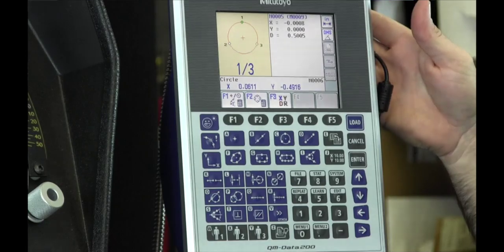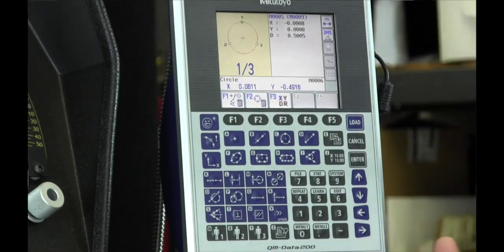It comes equipped with the Mitutoyo QM Data 200, which makes it really easy to take some of the measurements that you're going to do every day with a comparator.